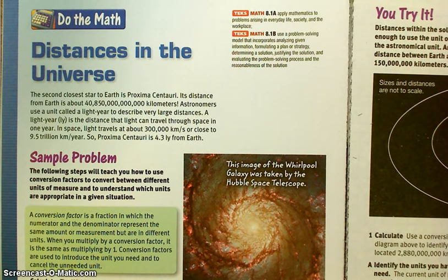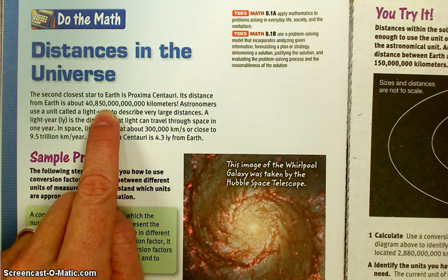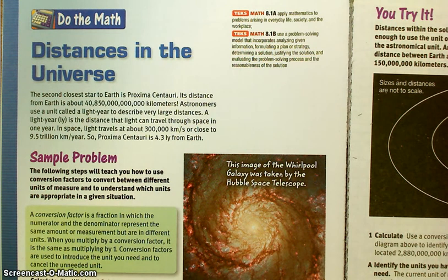It says the second closest star to Earth is Proxima Centauri. Its distance from Earth is about 40,850,000,000 kilometers. Astronomers use a unit called a light year to describe very large distances, because you can see already that that is such an enormous number that my mind has a hard time imagining that many kilometers.